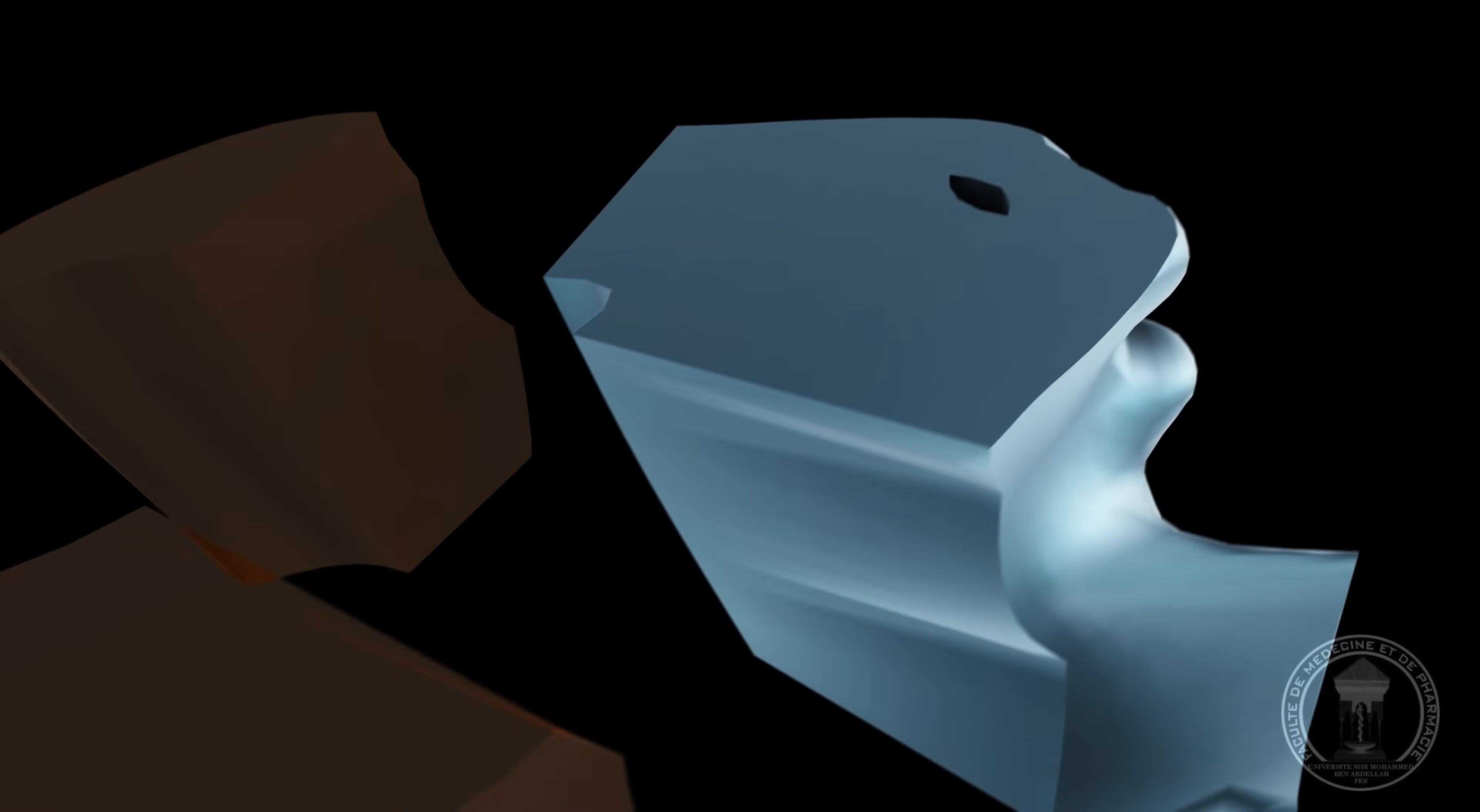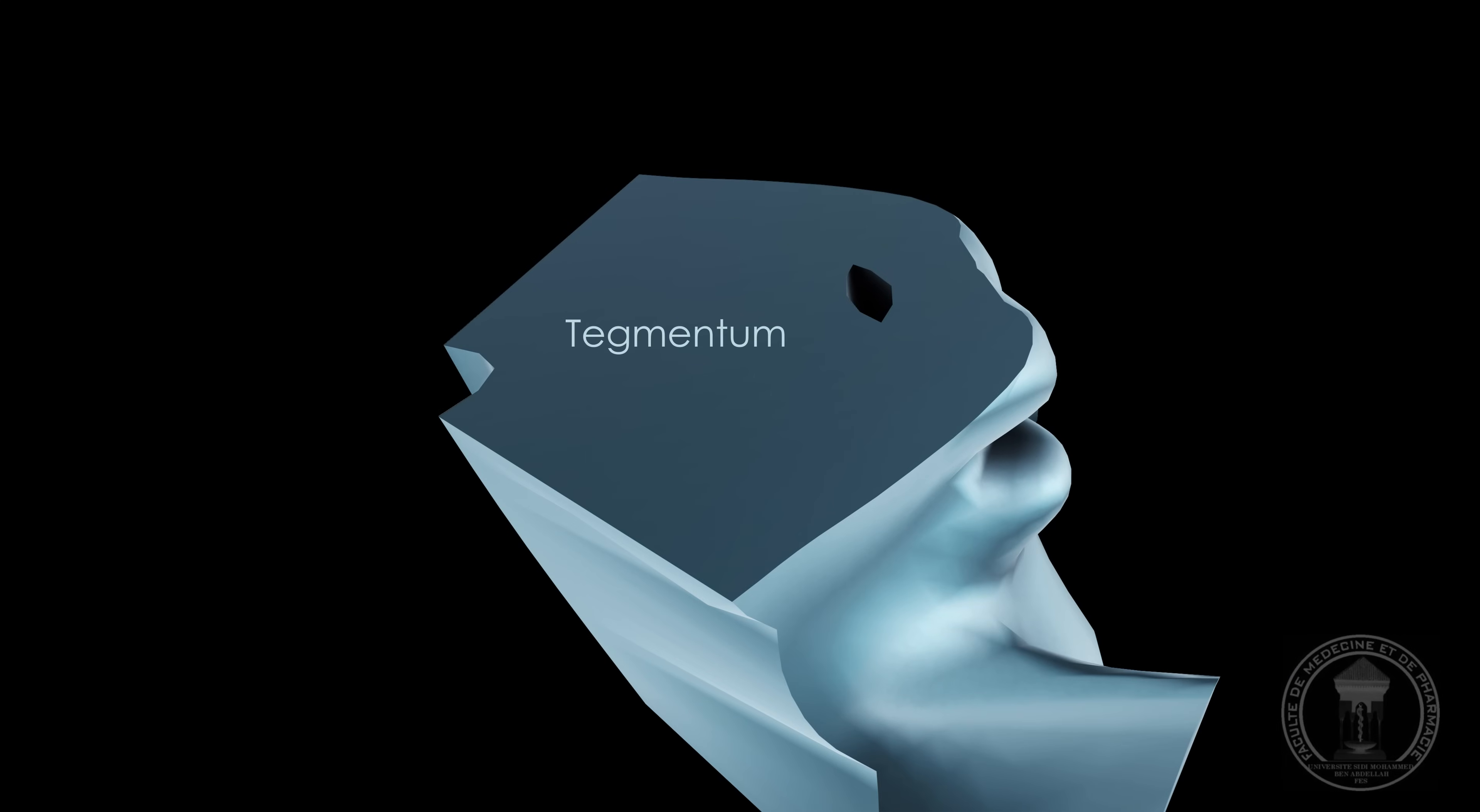Behind these two peduncles, we find the tegmentum with a hole in its backside, the cerebral aqueduct, also known as the aqueduct of Silvius. It connects the third to the fourth ventricle.